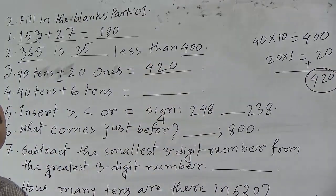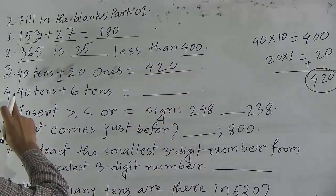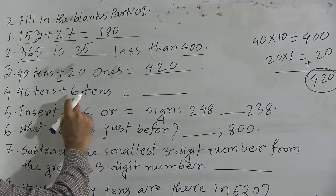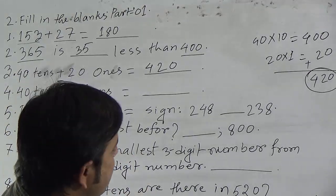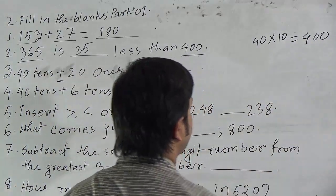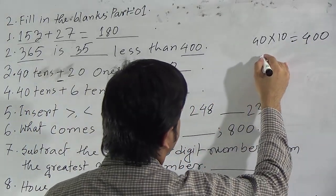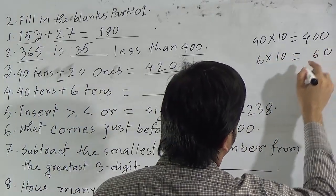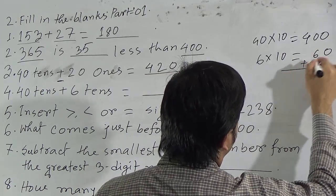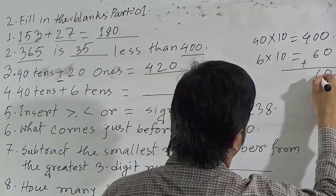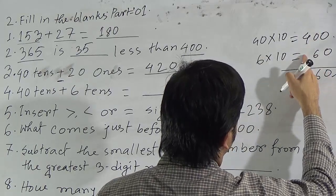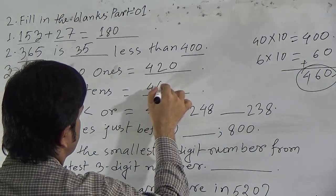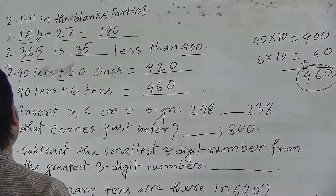Question 4: 40 tens plus 6 tens. 40 tens means 400. 6 tens means 6 multiplied by 10, which equals 60. Adding 400 and 60: 0 plus 0 is 0, 0 plus 6 is 6, and 4 in hundreds. So the answer is 460. Questions 3 and 4 are similar types.